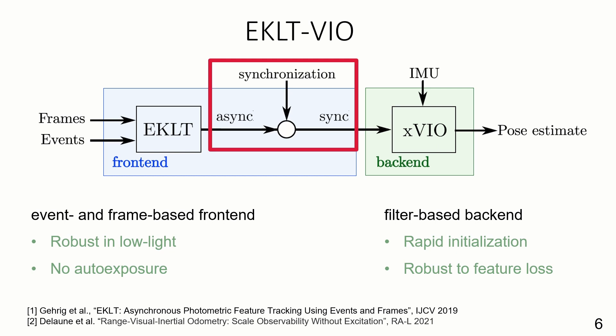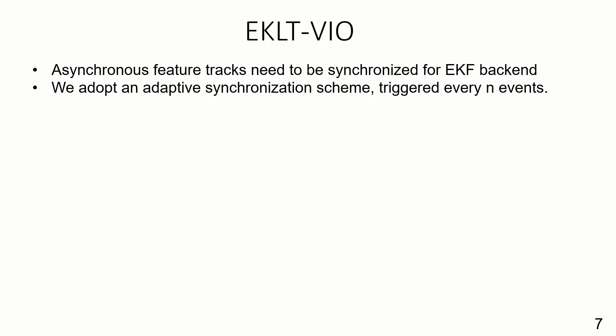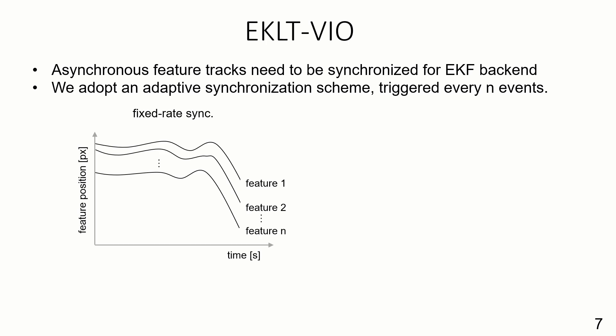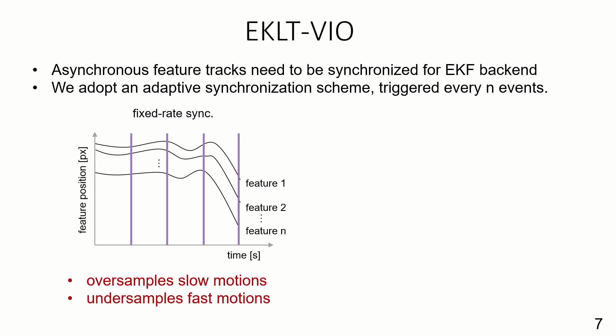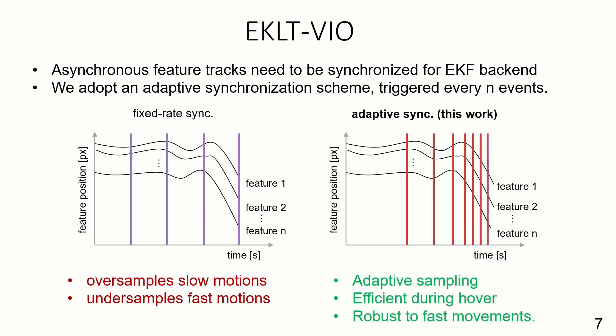EKL-TVIO derives a significant part of its robustness from adaptively triggering the back-end depending on the scene motion. It does this by using a variable rate synchronization step, which interpolates features to a common timestamp, illustrated below with 1D feature tracks. A fixed-rate synchronization scheme would inevitably over-sample slow motions while under-sampling fast motions. By contrast, our adaptive scheme instead samples every N events, and thus updates less when little motion is present and more during fast motions, thereby staying efficient and robust in both conditions.